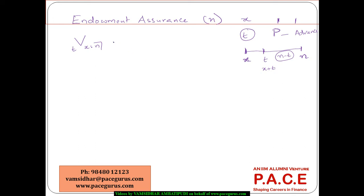For the prospective reserve, the expected present value of future claims is A(X+T : N−T). The premium P(X:N) was decided at the beginning and did not change. The present value of future premiums still to be paid — there are N−T more periods — is given by the annuity ä(X+T : N−T), paid in advance.